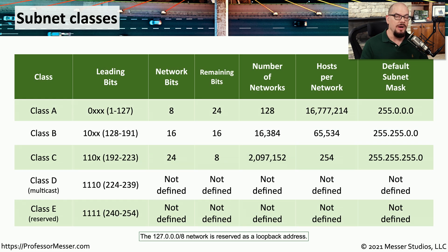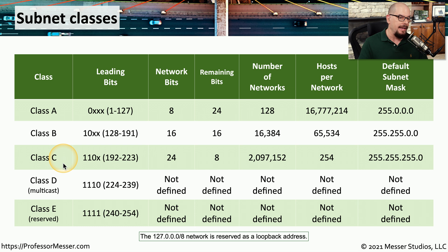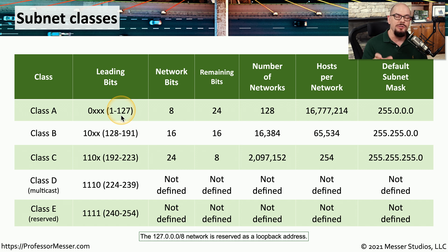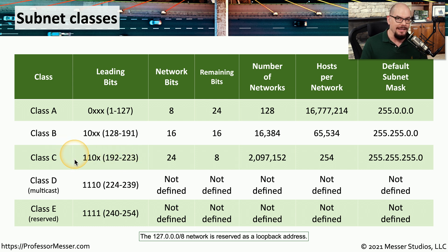There are technically five different classes for IP subnets. You will commonly see Class A, Class B, and Class C used because those are the classes assigned to different workstations. If you're working with IPv4 and multicast, you'll be using Class D addresses and subnet masking. Class E is a reserved range and you will never use these IP addresses on your production network. One way to determine the class of an IP address is to look at the first octet. If it starts with 1 through 127, it's Class A; 128 through 191 is Class B; 192 through 223 is Class C; 224 through 239 is Class D; and the reserved range is 240 through 254.